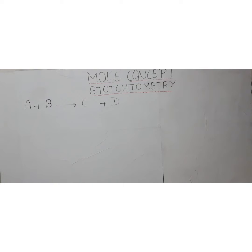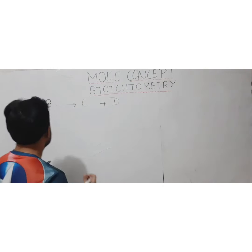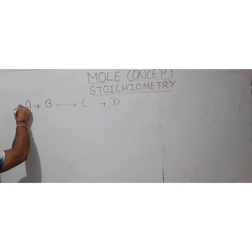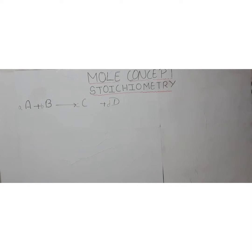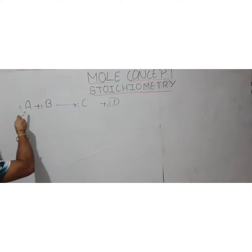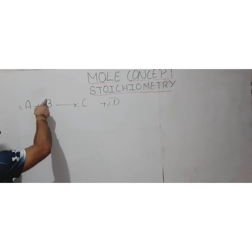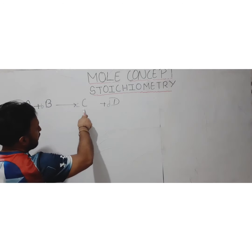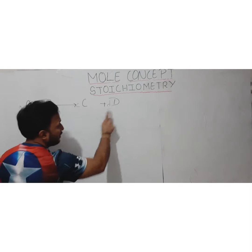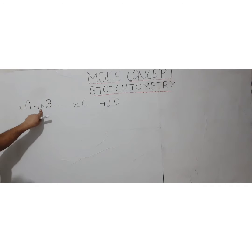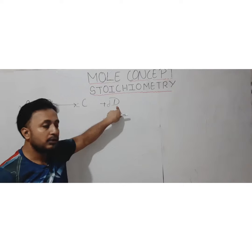A, B, C, and D are our reactants and products. We use coefficients to balance them, represented here as small a, b, c, and d. In this balanced chemical equation, stoichiometry states that 'a' amount of A reacts with 'b' amount of B, giving 'c' amount of product C and 'd' amount of product D. Only this specific quantity of reactants gives this specific quantity of products.